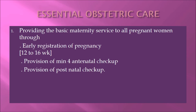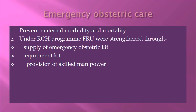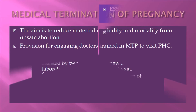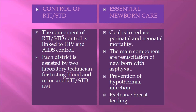Hospital obstetric care involves providing basic maternity services including early registration of pregnancy at 12 to 16 weeks, a minimum of 4 antenatal checkups, and postnatal checkups. Emergency obstetric care addresses maternal morbidity and mortality through supply of emergency obstetric kits and skilled manpower. Medical termination of pregnancy aims to reduce maternal morbidity and mortality from unsafe abortion by engaging trained doctors to visit primary health centers. The RTI and STD control component is linked to HIV and AIDS control.